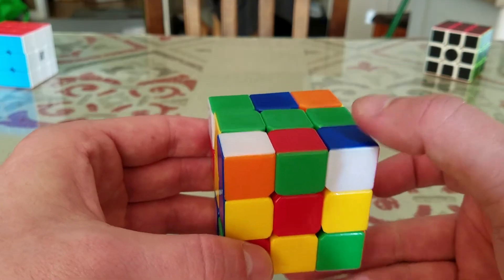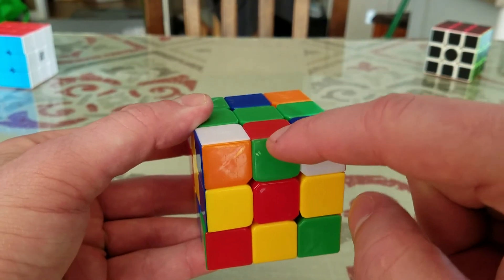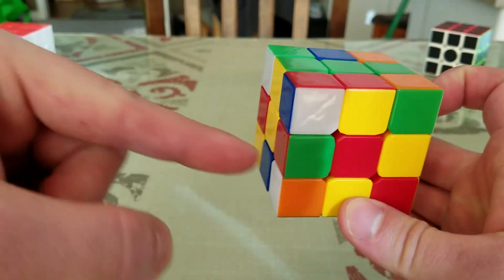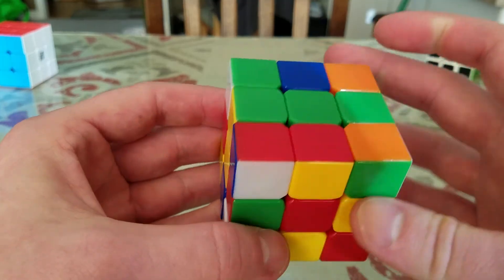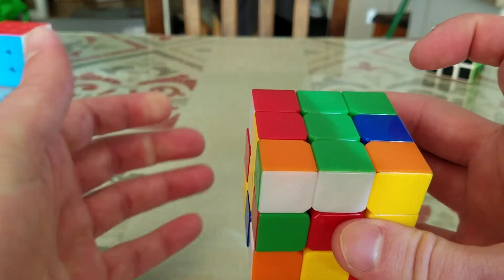So what we do to fix that when we have a piece that's flipped is we put the piece that's incorrect on its side. So now the red and the green is over here. We're going to turn the top one. We're going to turn the side up.